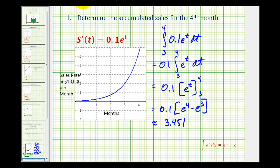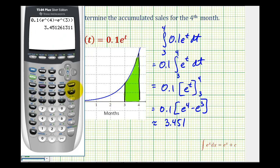Again, this would be the area on the interval from three to four under the function. But to determine the accumulated sales, you need to recognize that the scaling on the y-axis is by ten thousands. So I have to multiply this by ten thousands to determine the accumulated sales for the fourth month. So it's approximately thirty-four thousand, five hundred twelve dollars and sixty-one cents.